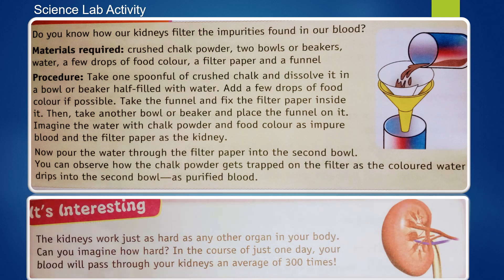Interesting fact: the kidneys work as hard as any organ in our body. In just one day, your blood passes through your kidneys an average of 300 times. Each time, the kidneys clean the impurities, and the pure blood returns to the heart while waste comes out as urine.